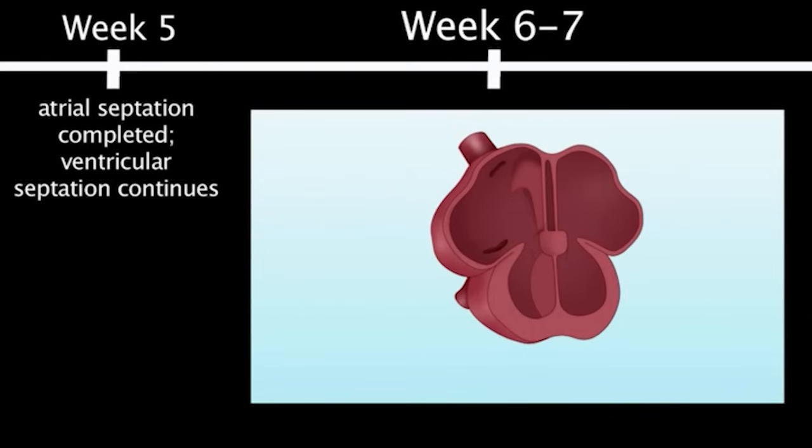By the sixth and seventh week of fetal life, the ventricular septum completely separate into the right ventricle and left ventricle.